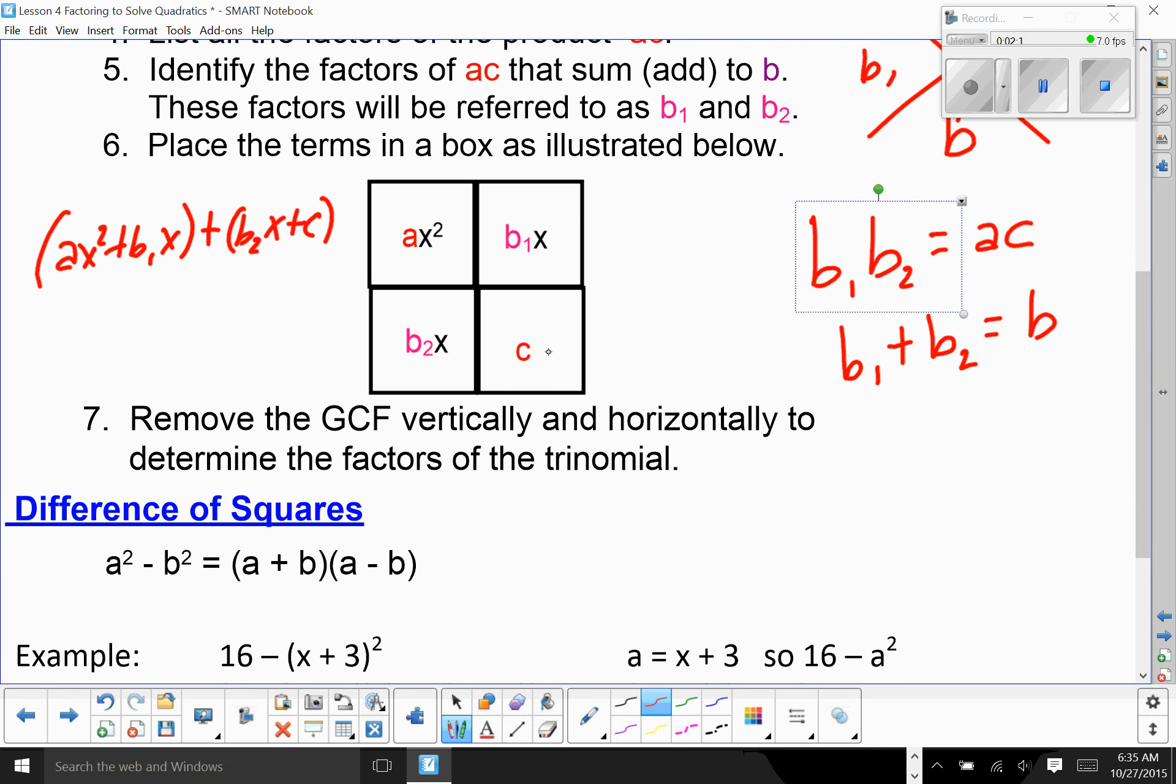If you do it by the box, you want to remove the greatest common factor vertically, and then you want to remove the greatest common factor horizontally. Your factors up here and your factors here will be your final answer.